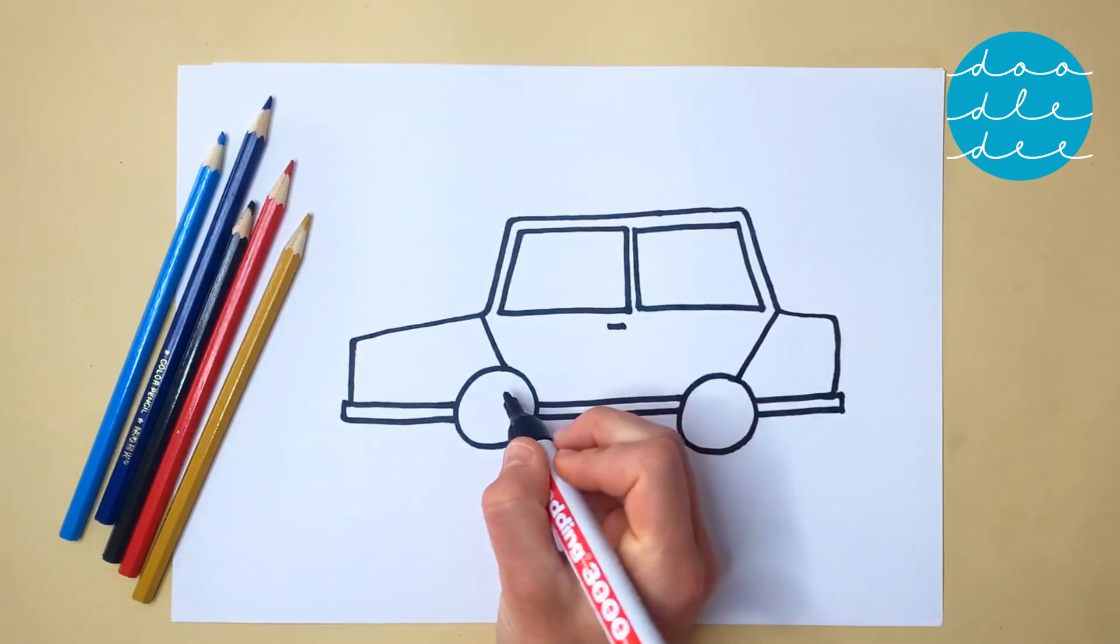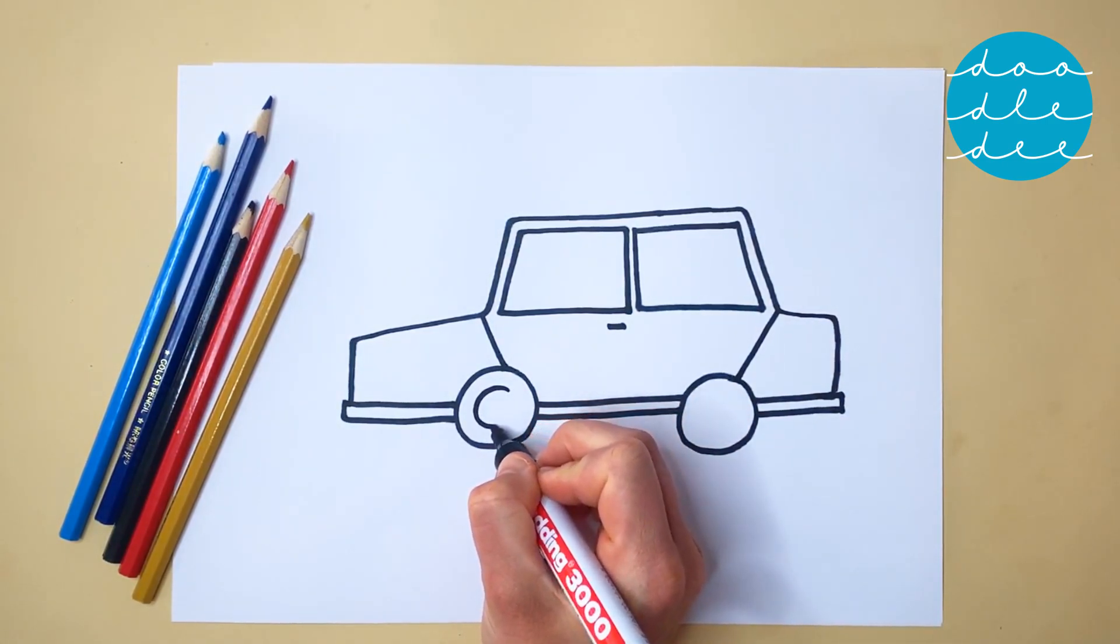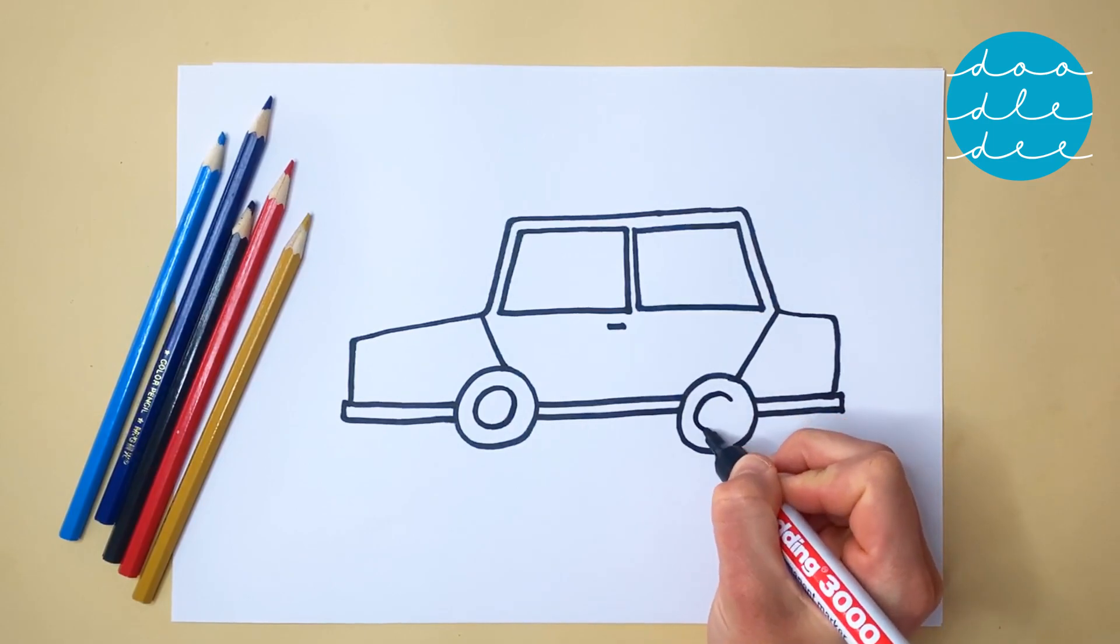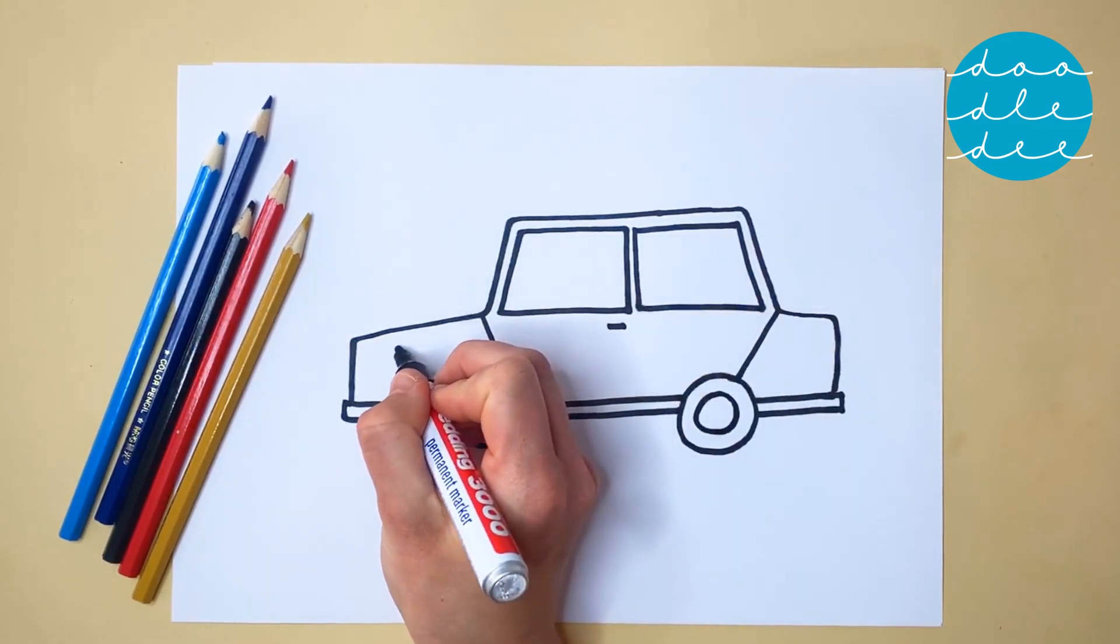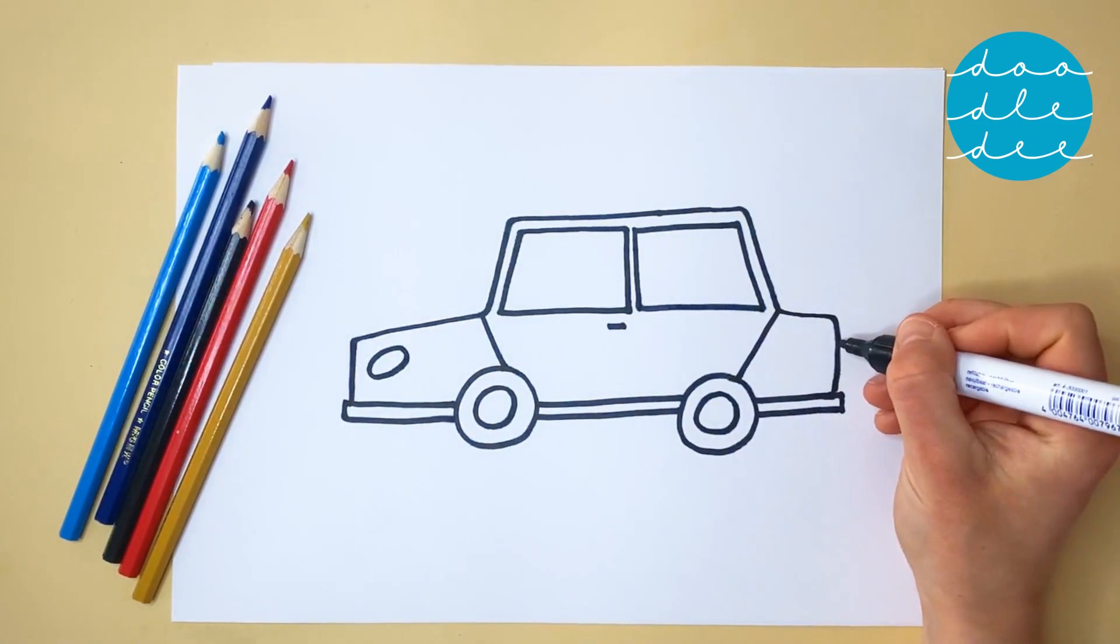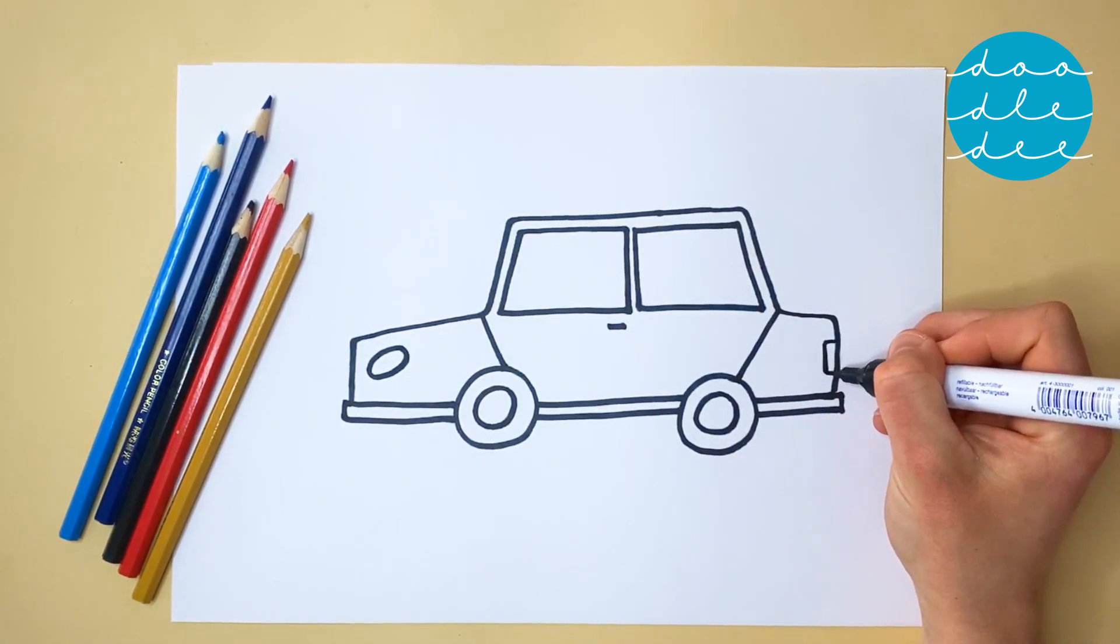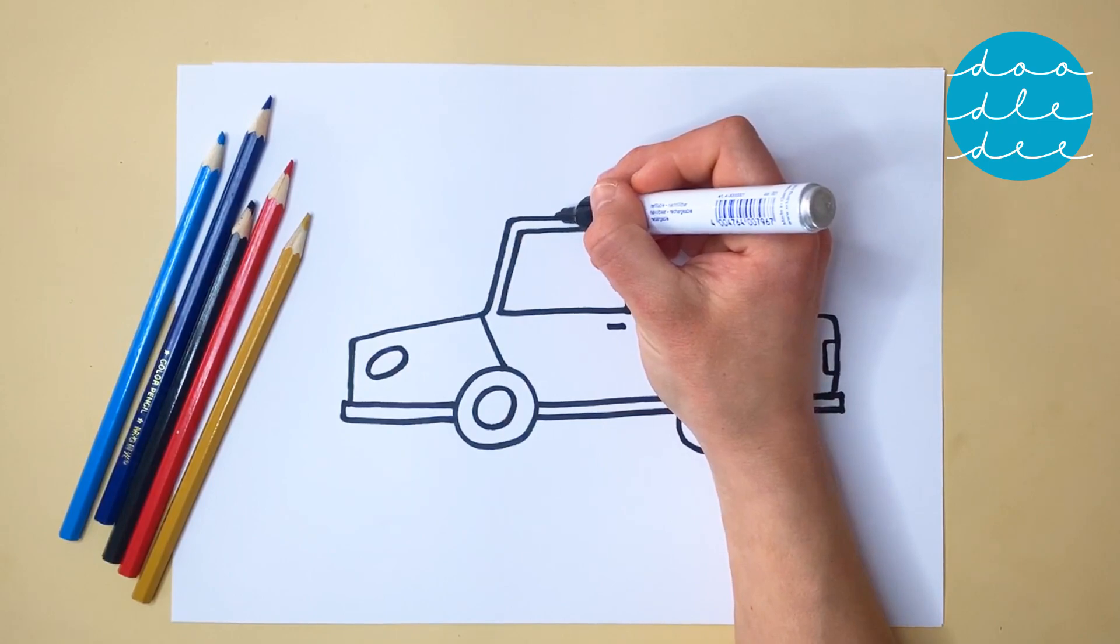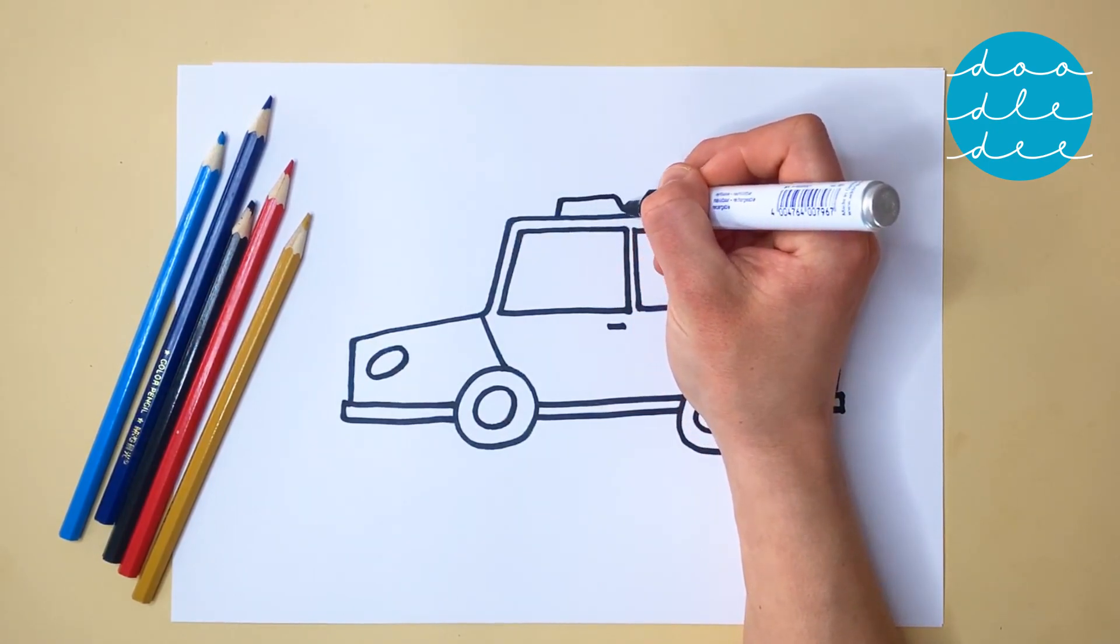Draw smaller circles in both wheels. And an oval light at the front. A rectangle light at the back. And a siren at the top with lines for the siren's noise.